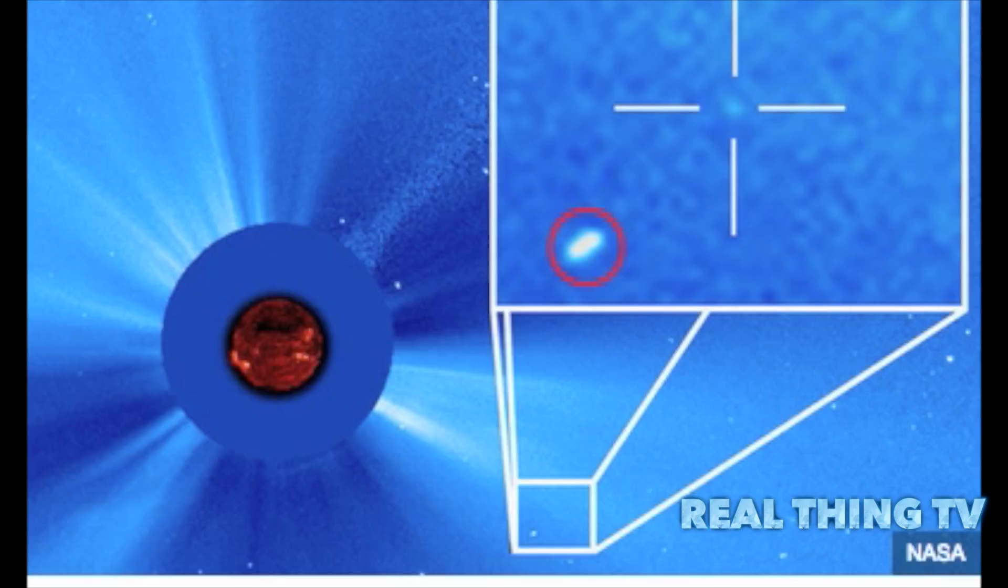SOHO is on a mission to observe the Sun and interplanetary space above Earth's atmosphere which blocks solar radiation making it possible for us to live here. This includes tracking the constant outward flow of particles known as the solar wind, as well as giant explosions of escaping gas called coronal mass ejections.